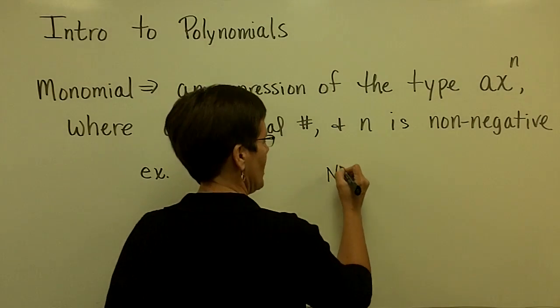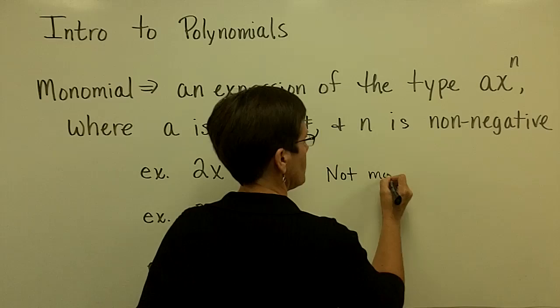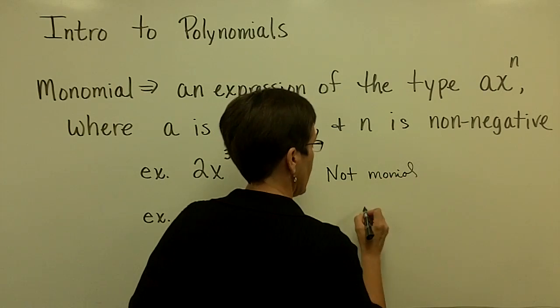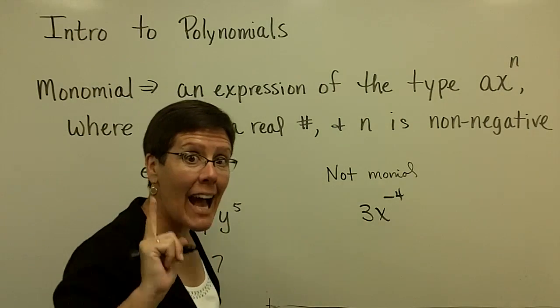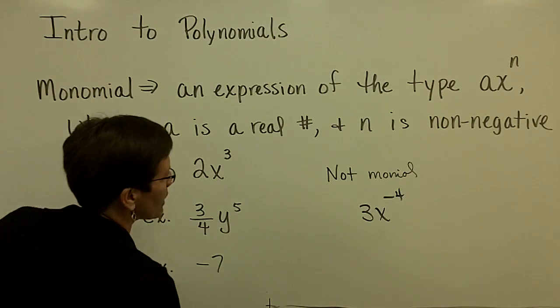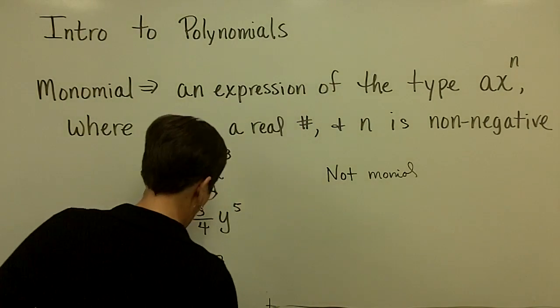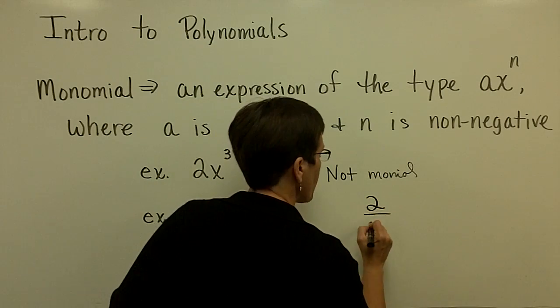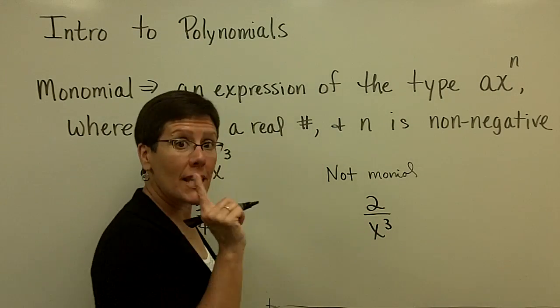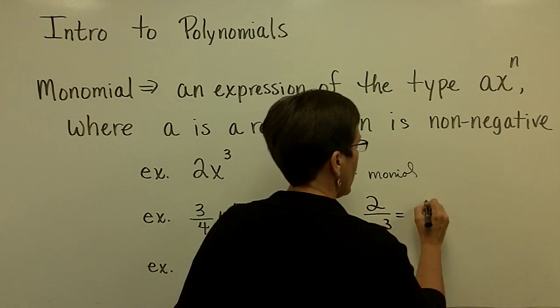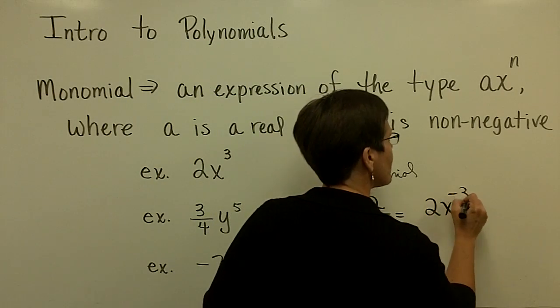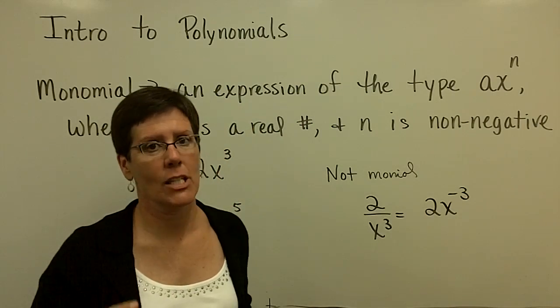Something that is not a monomial is something like 3x^(-4). We will not be raising that to a negative power. Or 2 over x³, because when you move the variable up into the numerator, you have that as 2x^(-3). That is not a monomial.